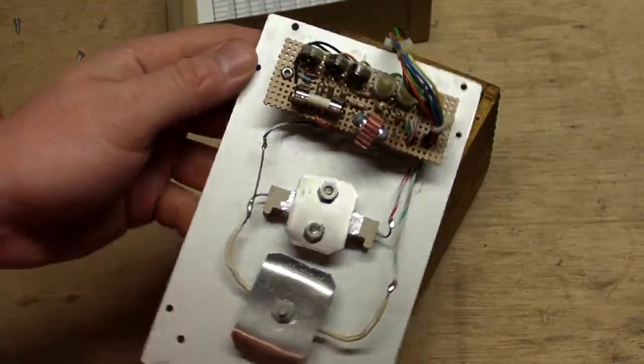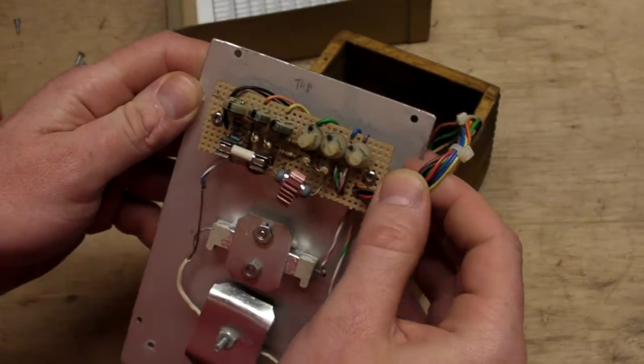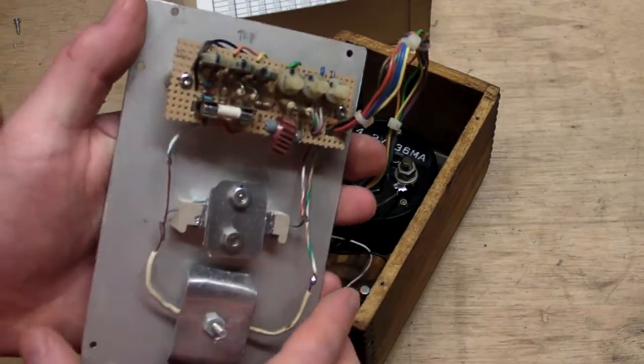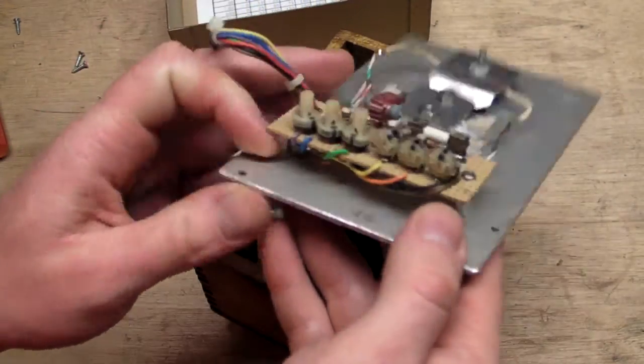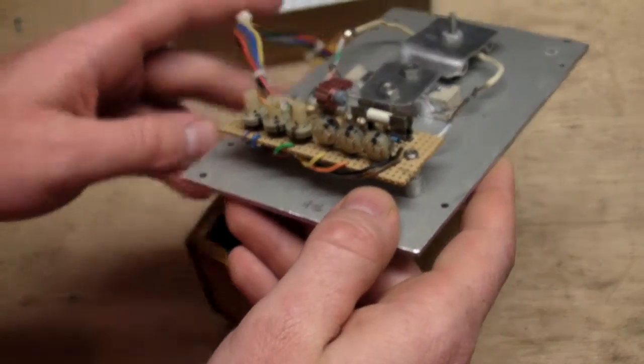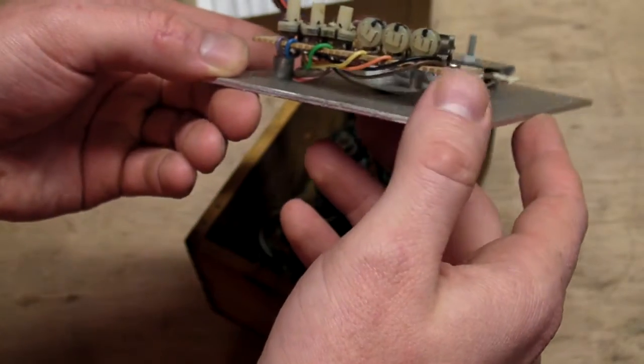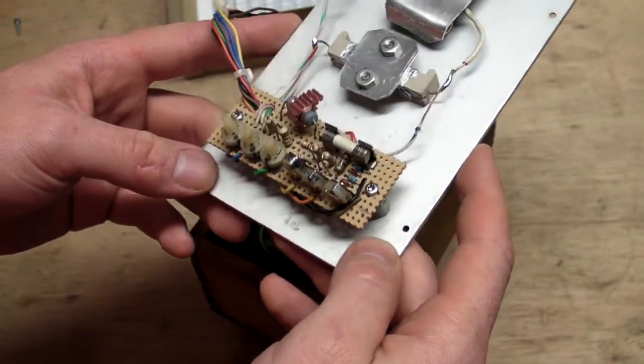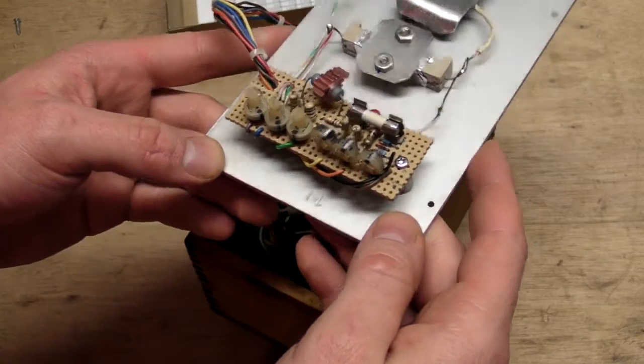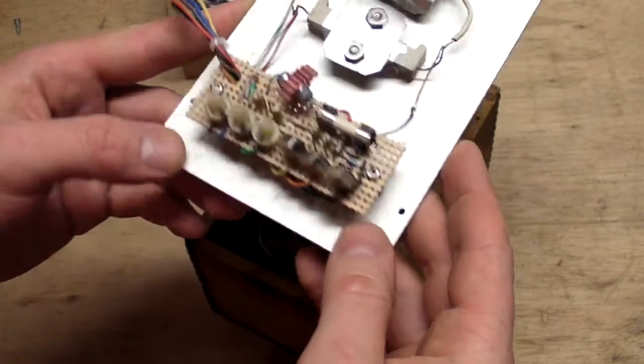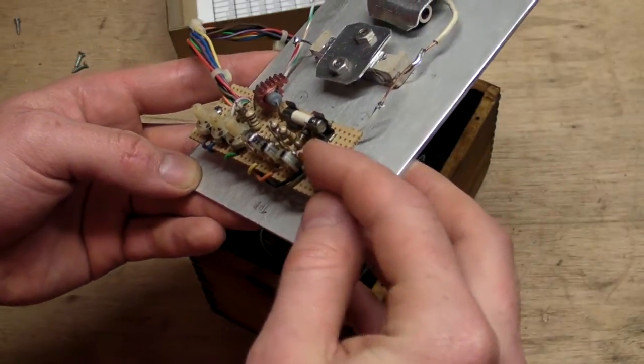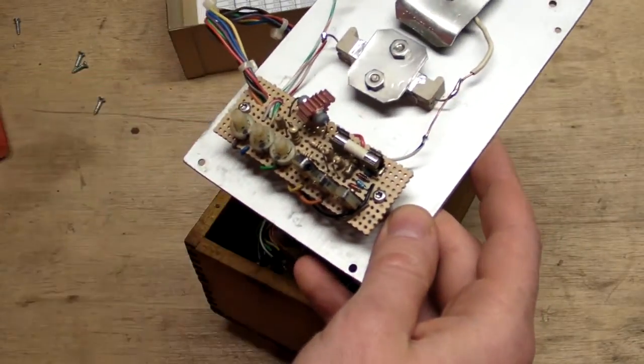Where does the fuse go? There it is, the fuse goes right there. I got a whole bunch of pots. These pots I actually got from the same entertainment system amplifier that I got those other hundred or ten thousand microfarad caps that I put into my variable power supply.